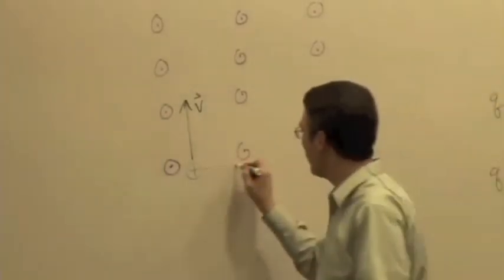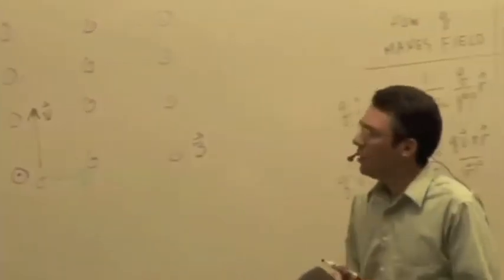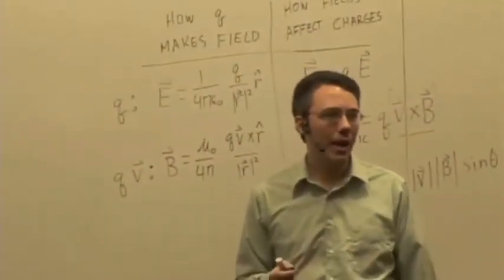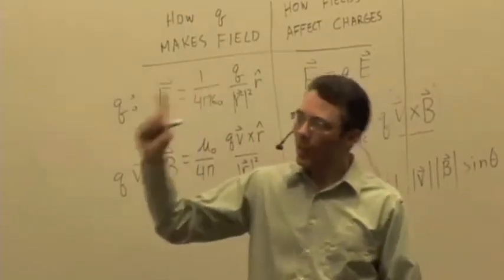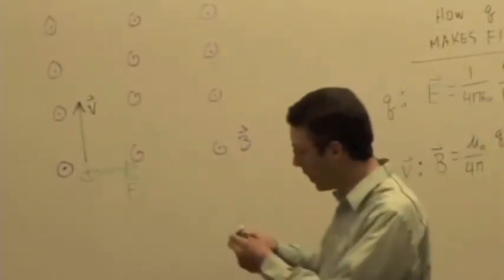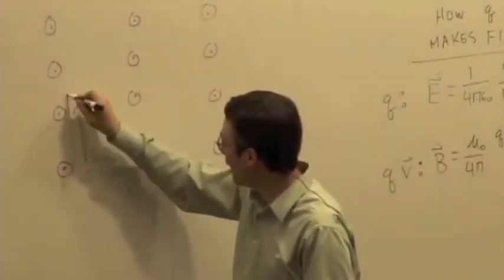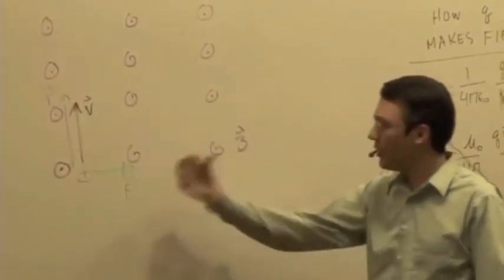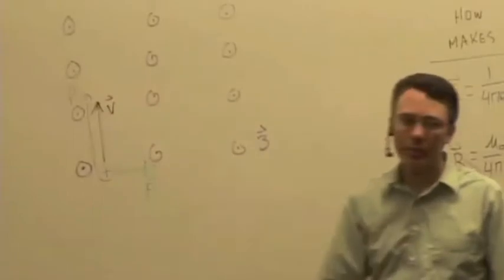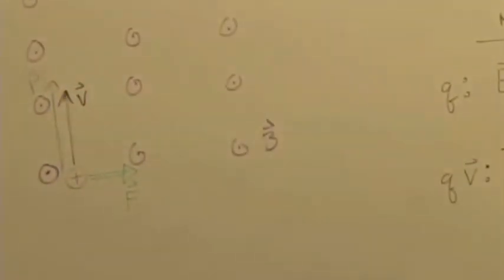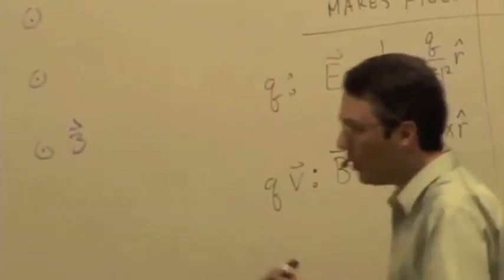V cross B — thumb points that way. The velocity is going to start swerving to the right. We can think of this in a number of different ways.